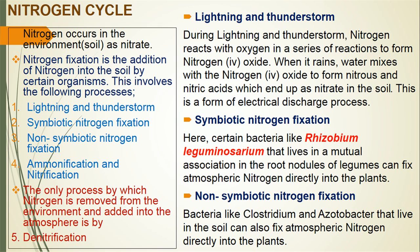Let's look at these processes one after the other. Lightning and thunderstorm: during lightning and thunderstorm, nitrogen reacts with oxygen in a series of reactions to form nitrogen oxide. When it rains, water mixes with the nitrogen oxide to form nitrous and nitric acids, which end up as nitrate in the soil. This is a form of electrical discharge process.